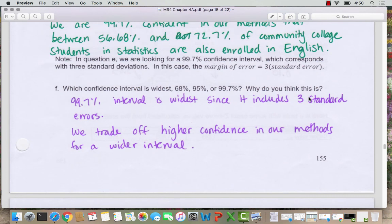So question F asks us to think about which confidence interval is widest. We see clearly from our calculations that the 99.7% interval is widest since it includes three standard errors. It goes lower than the other intervals and it goes higher than the other intervals. So that makes it a wider interval. So we trade off higher confidence in our methods for a wider interval. So if we want to be more sure, there has to be more possible population values.